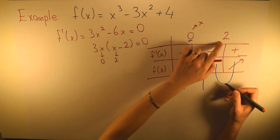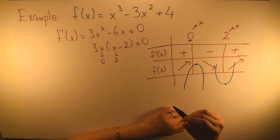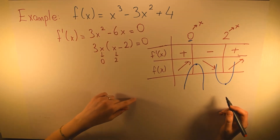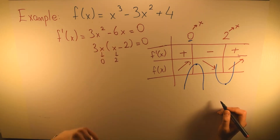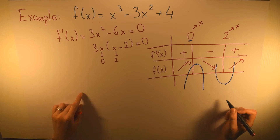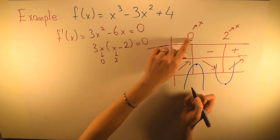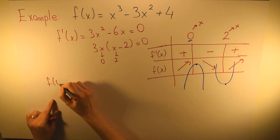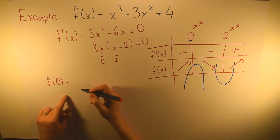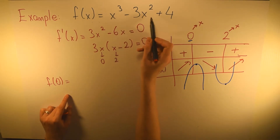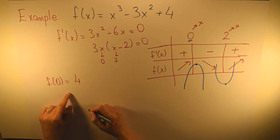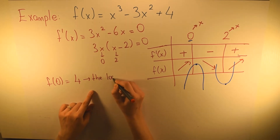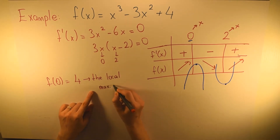For x = 2, this is our x value. We will put this value into our function and then find the y value, which gives the local minimum value. When x equals 0: f(0) = 0 - 0 + 4 = 4. So 4 is our local maximum value.